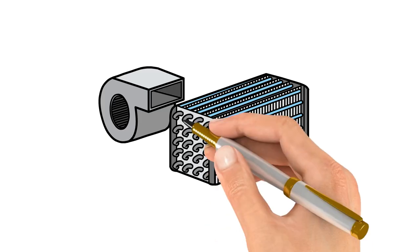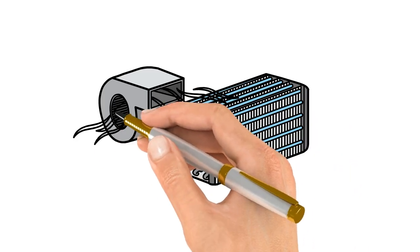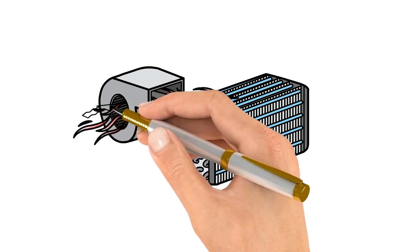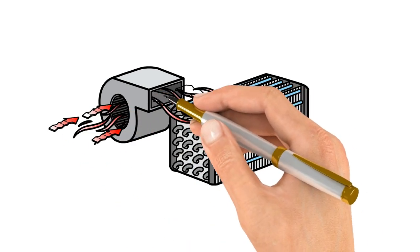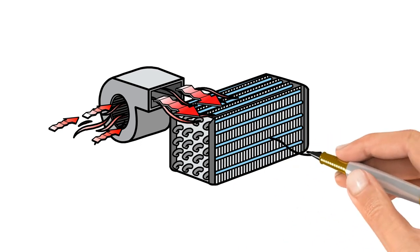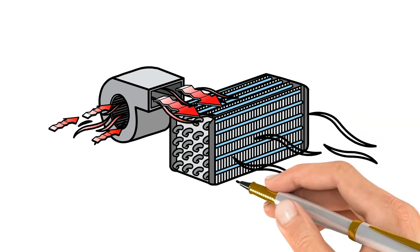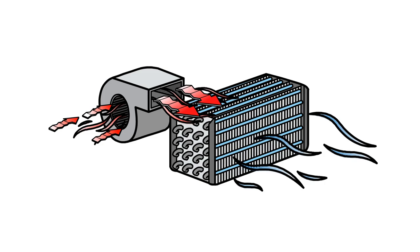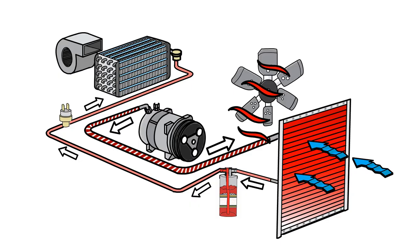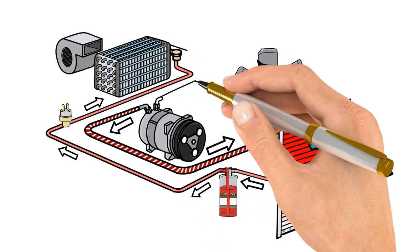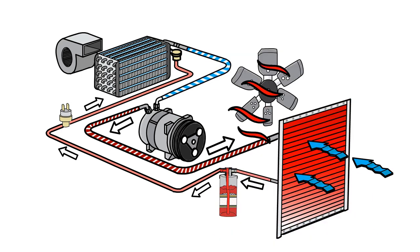We're going to pull in the hot air from the vehicle through our blower, blow that hot air across this coil. And as these droplets of refrigerant evaporate, they absorb the heat from this air going across the coil. So you're going to pull that gas back into the compressor, compress it into a high pressure gas, and start the whole cycle over again.